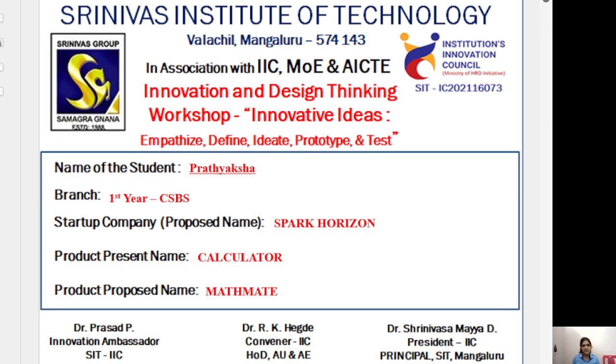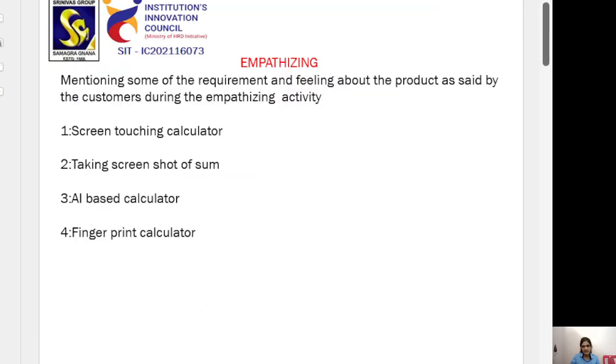The startup company name is Spark Horizon. The product to present name is Calculator, and the product proposed name is Matmate.